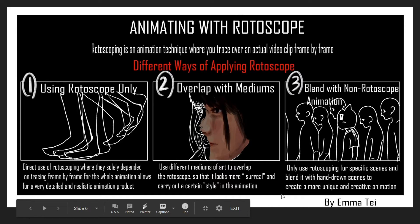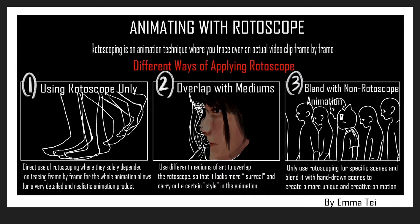I went on to research different ways people incorporate or use the rotoscoping technique in animation and found out that there were many ways to use it. These are just some of the ways you can apply rotoscope: The first is that you use rotoscope only to create your whole animation, which allows you to have a very detailed and realistic animation product. The second is that you overlap the tracing of the rotoscope with different mediums to create a surreal look and carry out a certain style. And third, you can blend with non-rotoscope animation where you only use rotoscoping for specific scenes and blend it with hand-drawn scenes to create a more unique and creative animation.